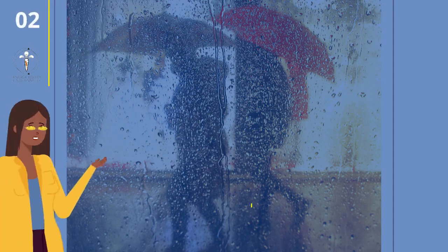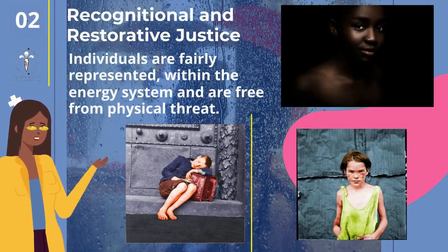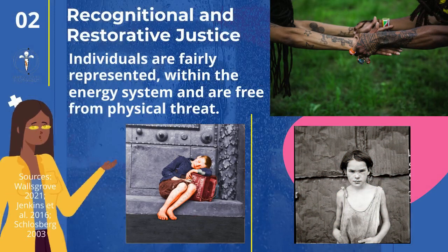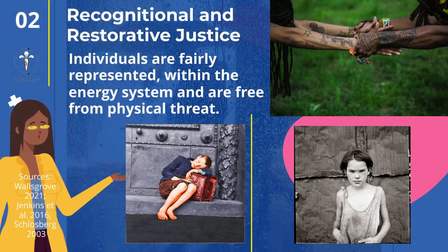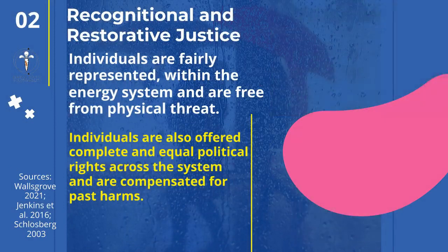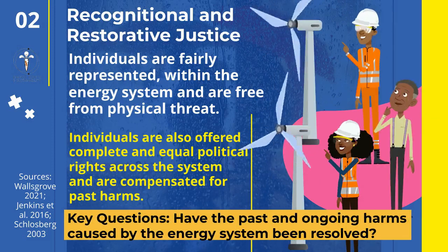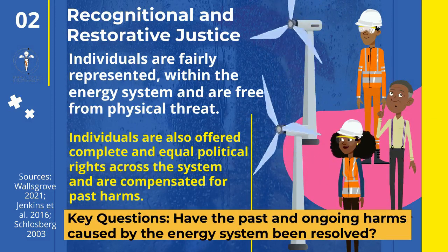Now let's look at recognitional and restorative justice, which asks and requires that individuals are fairly represented within the energy system and are free from physical threat. Individuals are also offered complete and equal political rights across the system and would be compensated for past harms. A key question here is: have the past and ongoing harms caused by the energy system been resolved?